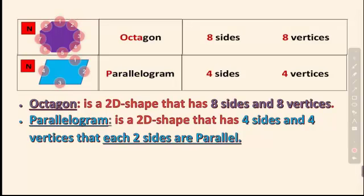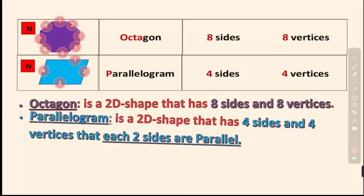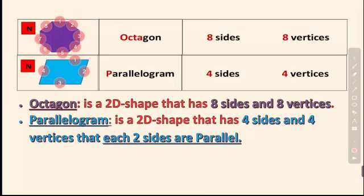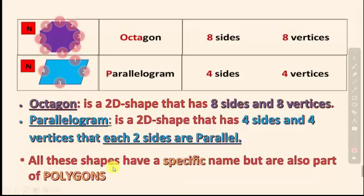All the 2D shapes we reviewed — octagon, parallelogram, triangle, square, and so on — are all polygons, except the circle. The circle is not a polygon.